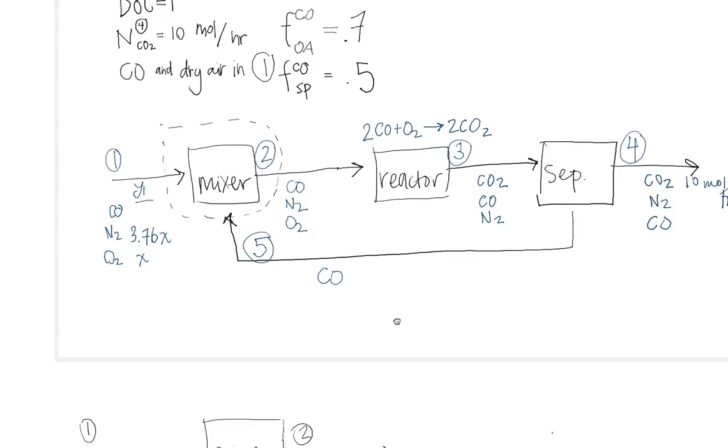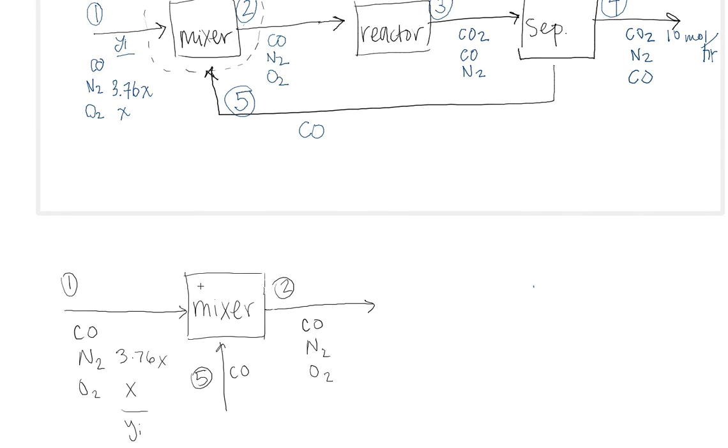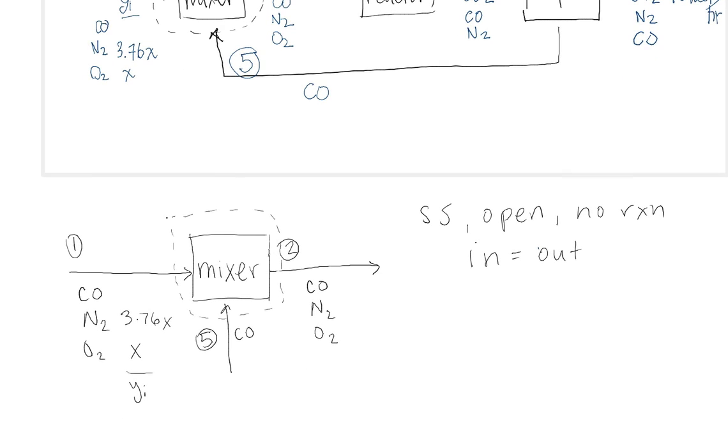So we've already redrawn the mixer down here. The first thing you want to do is evaluate your system and this is a steady state system. It's open and there's no reaction going on within this system boundary. And your mass balance equation is just in equals out. So to do degrees of freedom, this is just like the simple problems we've been working on before.